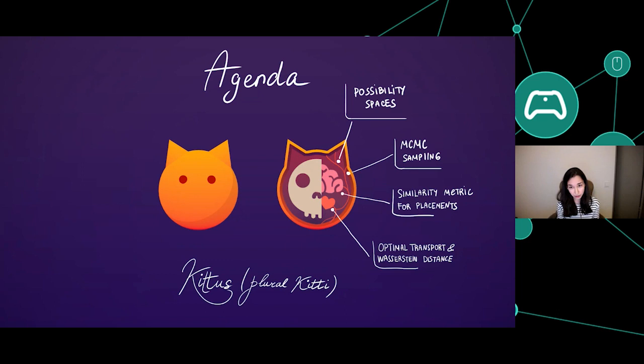We're going to talk about fairly technical things that comprise Ketus's brain, such as possibility spaces, sampling the space with Markov Chain Monte Carlo, defining similarity with placements, and a brief introduction to optimal transport and Wasserstein distance. My main goal is to give you an intuition about these pieces and hopefully inspire you to use some of them in your own work.